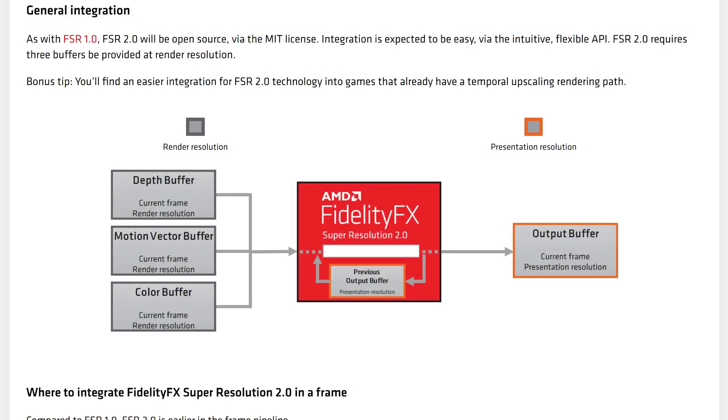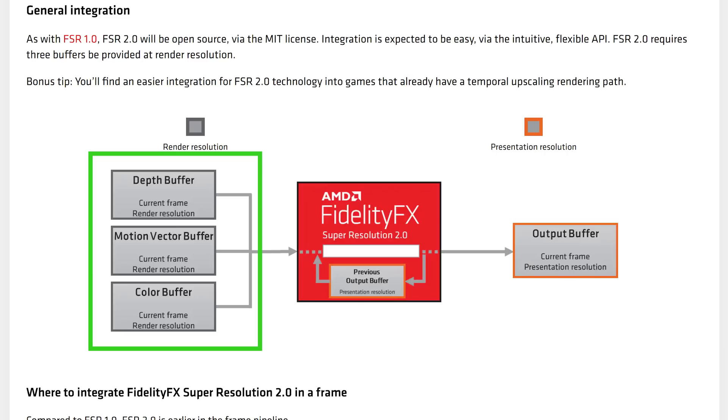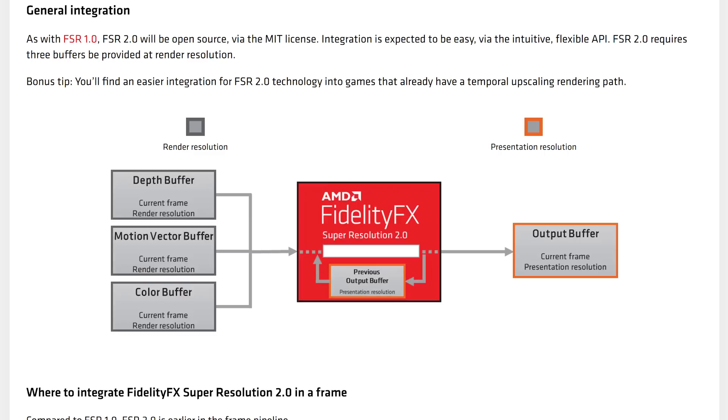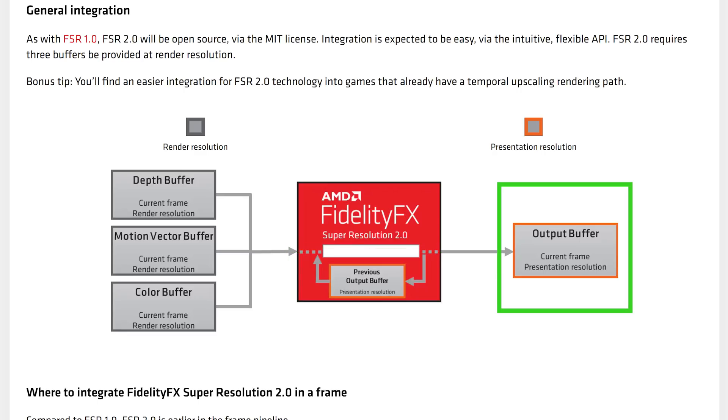So what new information do we have from today's presentation? Let's talk about how FSR 2.0 works, at least in a broad sense. Basically FSR 2.0 works like other temporal upscaling solutions. On the input side, FSR 2.0 requires standard game data at the render resolution — lower than the target resolution — depth buffer data, motion vectors and color data. Then FSR 2.0 combines this information with a feedback loop of the previous output buffer, which are the previously rendered frames that make this a temporal solution, and then out comes an upscaled image at the target resolution.